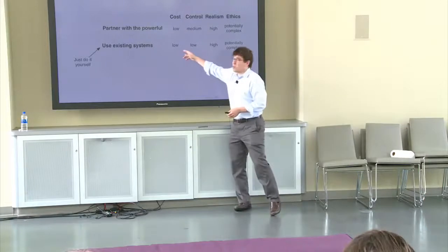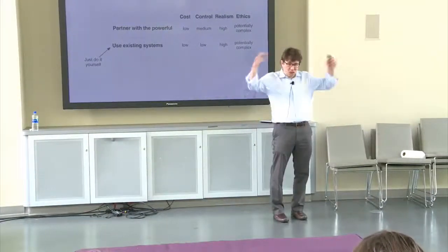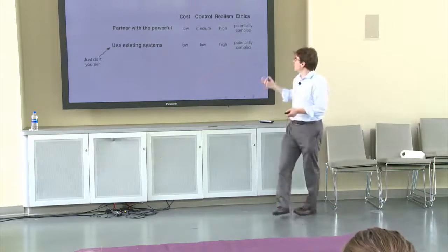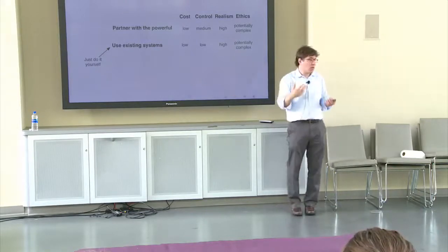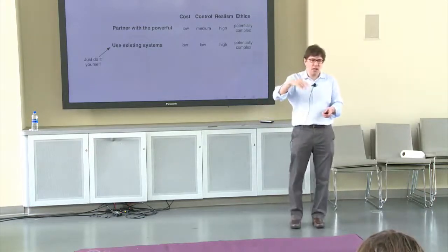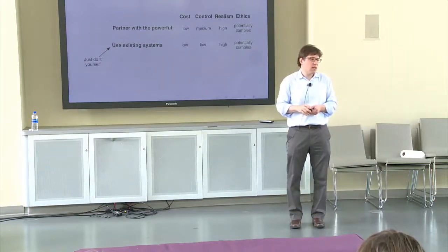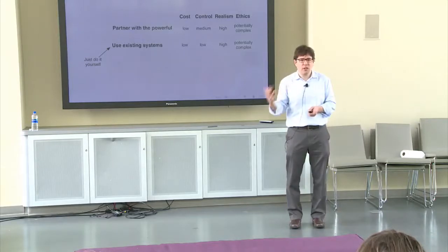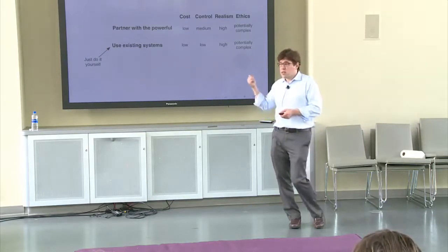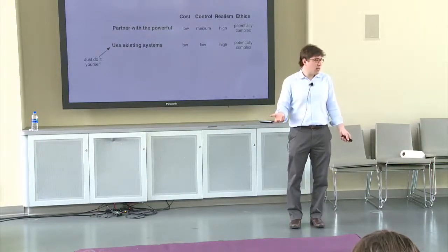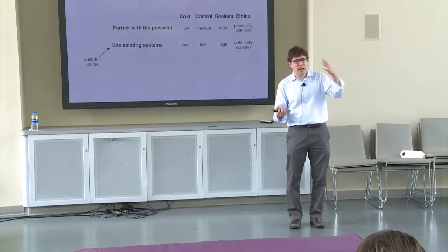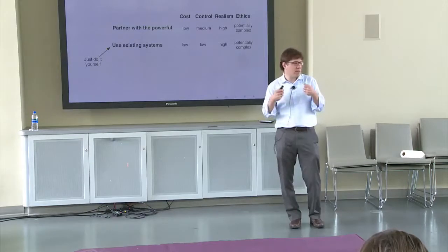And so here you have low cost because you're not trying to build Craigslist yourself. You're just using Craigslist. You have relatively little control because you don't control the platform. The realism is often high because you're working in an existing system. And the ethics are potentially complex. Not always, but potentially complex because you're entering into a real system. And so this is a use existing system strategy. Receivo and VanderWright also use that strategy as well. So this is something you could potentially do this next week. Not the whole thing, but like you can get started very quickly if you have a really nice way of attaching what you want to do on top of some infrastructure that already exists.